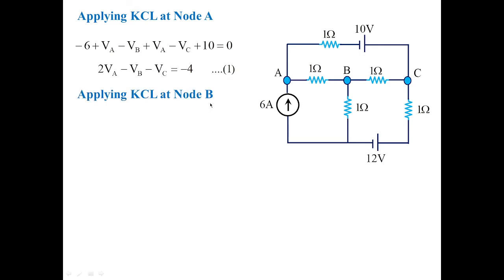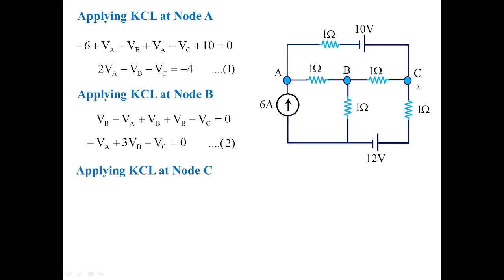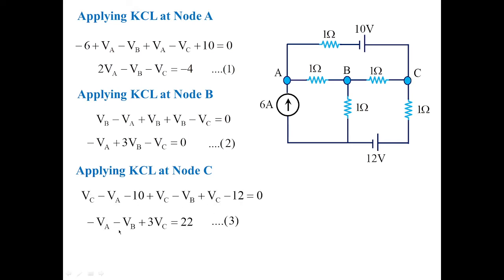Applying KCL at node B: (VB minus VA)/1 plus (VB minus VC)/1 plus VB/1 equals zero, giving minus VA plus 3VB minus VC equals zero. This is equation 2. Applying KCL at node C: (VC minus VA minus 10)/1 plus (VC minus VB)/1 plus (VC minus 12)/1 equals zero, giving minus VA minus VB plus 3VC equals 22, because minus 12 and minus 10 go to the right-hand side. This is equation 3.